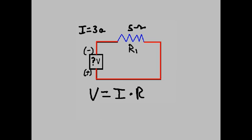We're given I and we're given R. So let's substitute the values. V equals 3 amps times 5 ohms. Let's move that up a bit. Let's do the math. V equals 15 amp ohms.